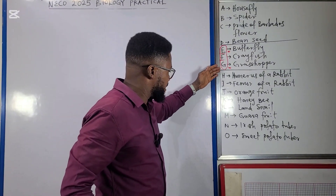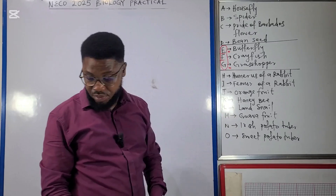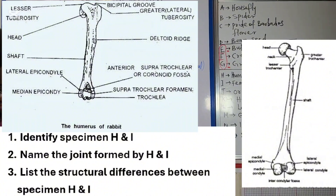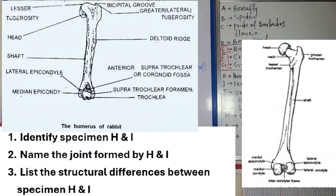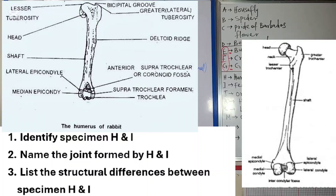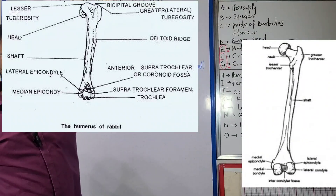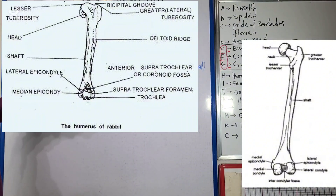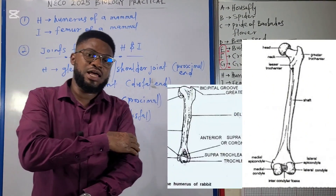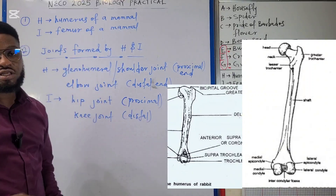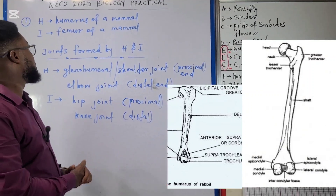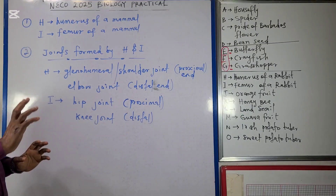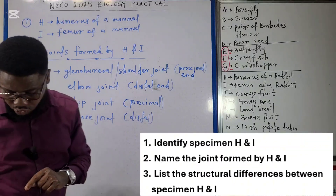Talking about specimens H and I — what are the probable questions? Question 1 says: identify specimen H and specimen I. When you look at specimens H and I, you do not necessarily have to say it is the humerus or femur of a rabbit. You can just say specimen H is the humerus of a mammal — that's the arm bone — and specimen I is the femur of a mammal, the thigh bone.